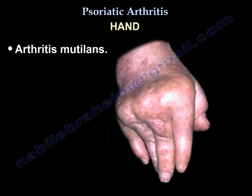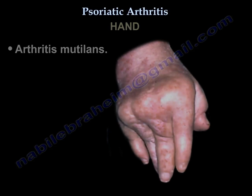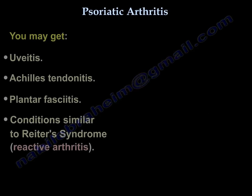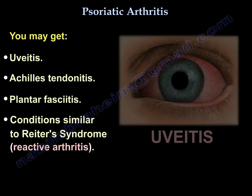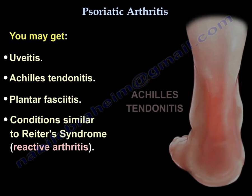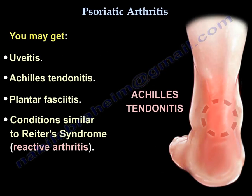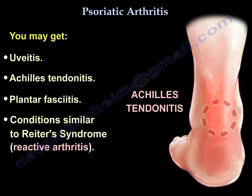You may also encounter arthritis mutilans, uveitis, Achilles tendonitis, and plantar fasciitis — features similar to Reiter's syndrome.